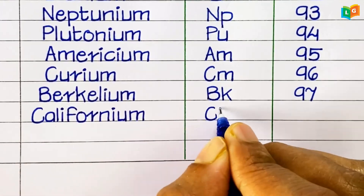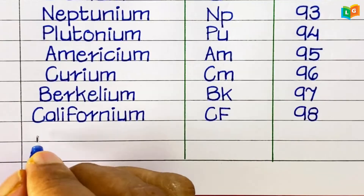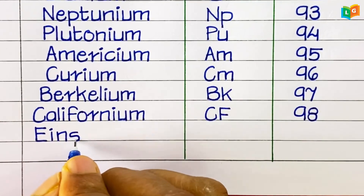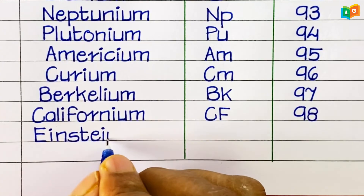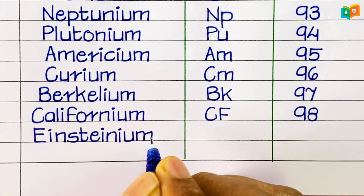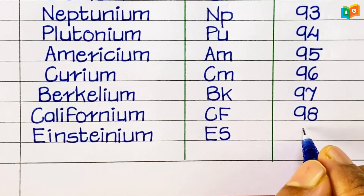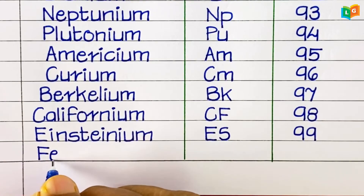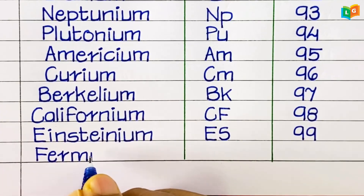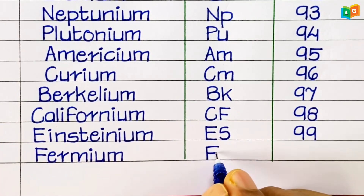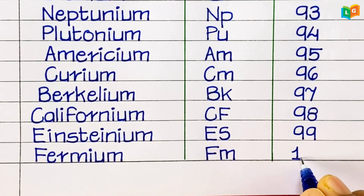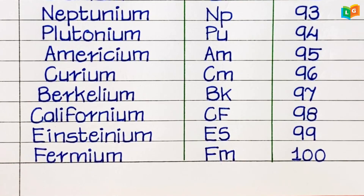Californium, symbol Cf, atomic number 98. Einsteinium, symbol Es, atomic number 99. And the last one is Fermium, symbol Fm, atomic number 100. So friends, thanks for watching the video. If you like the video, please do like and subscribe the channel, and click the bell icon for more videos. Until then, take care and goodbye.